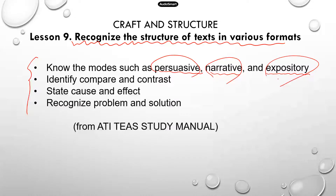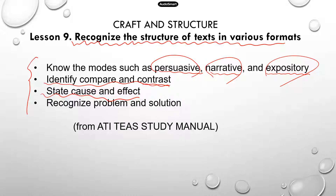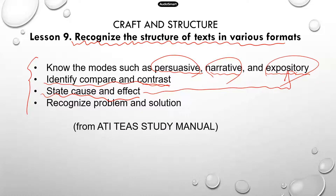We'll have more details on the different modes of text. Second, you need to identify compare and contrast. Compare is to find the similarities, and contrast is to find the differences. You need to be able to state and find the cause and effect relationship. This is usually in the mode of expository. When the author is trying to explain something, it can be a cause and effect event. For example, smoking causes a lot of diseases — the cause is smoking and the effect is a lot of diseases.